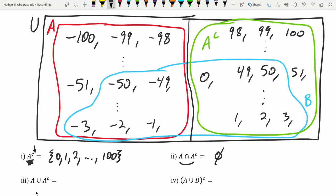And again, by definition, A union A complement. If it's not in A, then it's going to be in A complement. If it's not in A complement, it's going to be in A. That means if you union them together, you get everything possible. That is the universe set U.